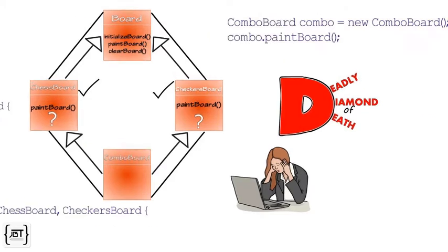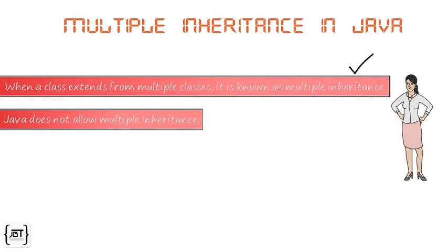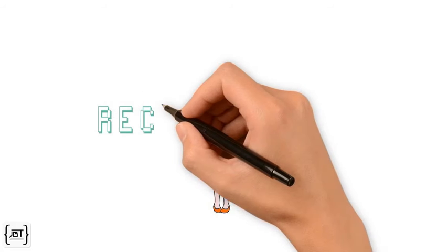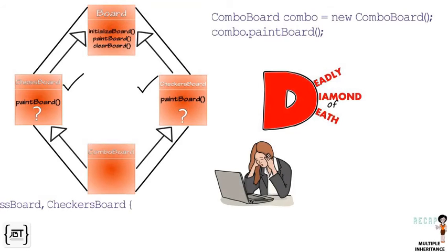Thus, to avoid this, Java prohibits multiple inheritance. Let's recap. In this video, we saw that Java does not allow a class to extend multiple classes — multiple inheritance — to avoid a problem known as the deadly diamond of death.